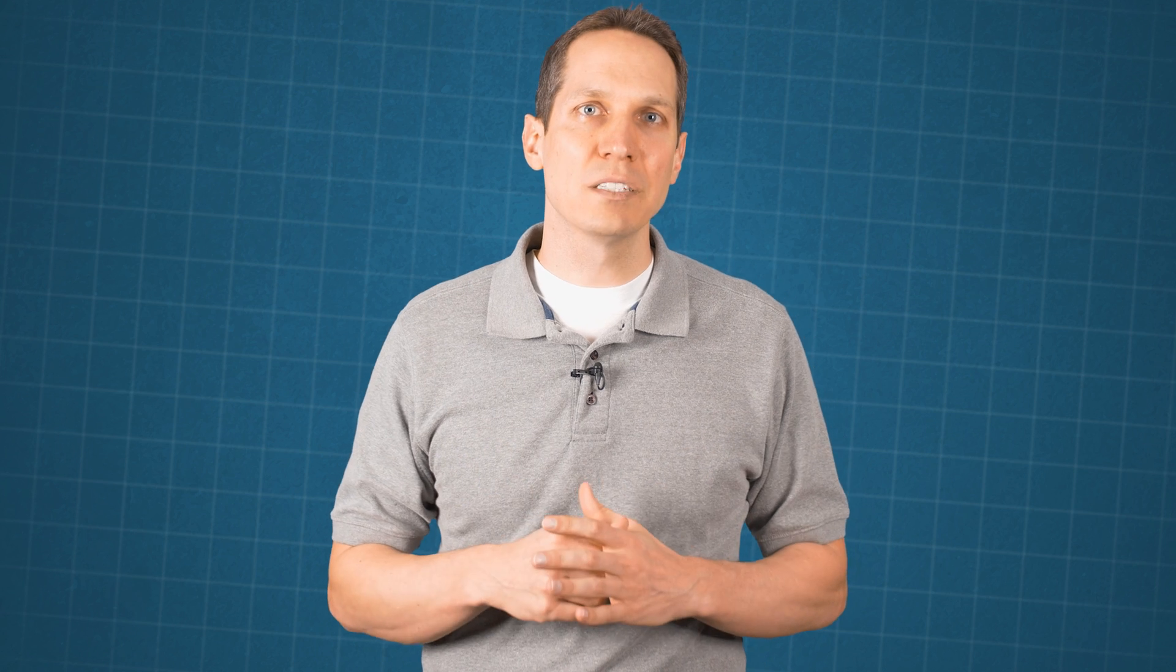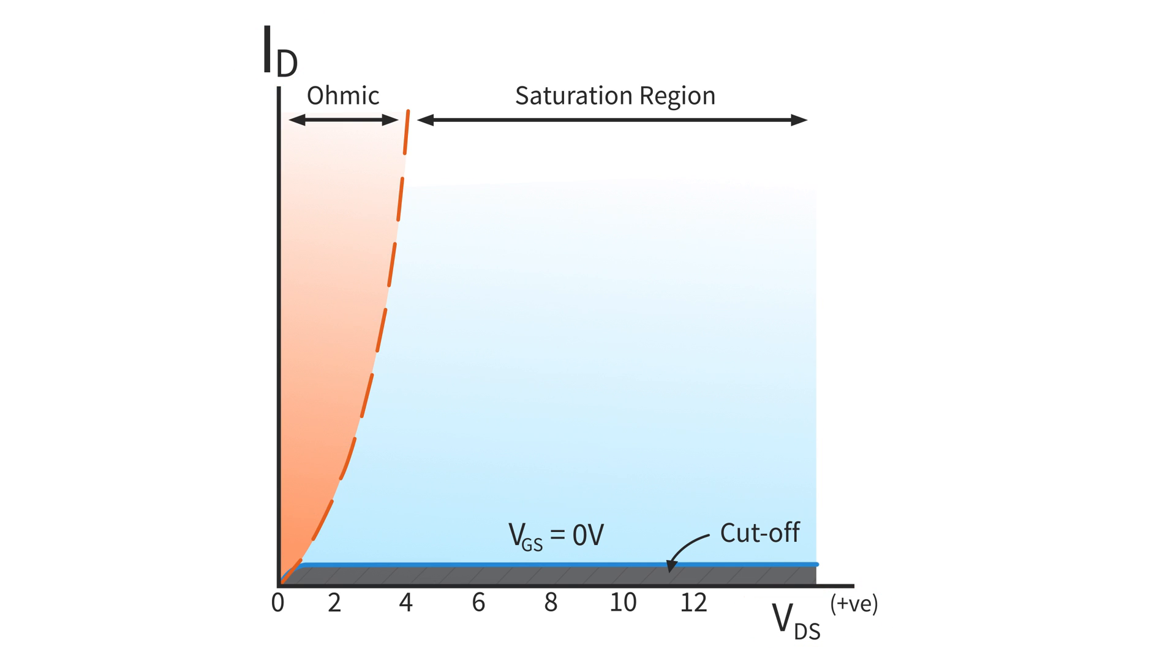So let's look at these different operating regions from another perspective, using a very common style of graph you'll see when dealing with MOSFETs. On this graph, we have the drain current, ID, on the y-axis, and the drain source voltage, VDS, on the x-axis. Now if the gate voltage is zero, as the drain source voltage increases, there will be no current besides a negligible leakage current.